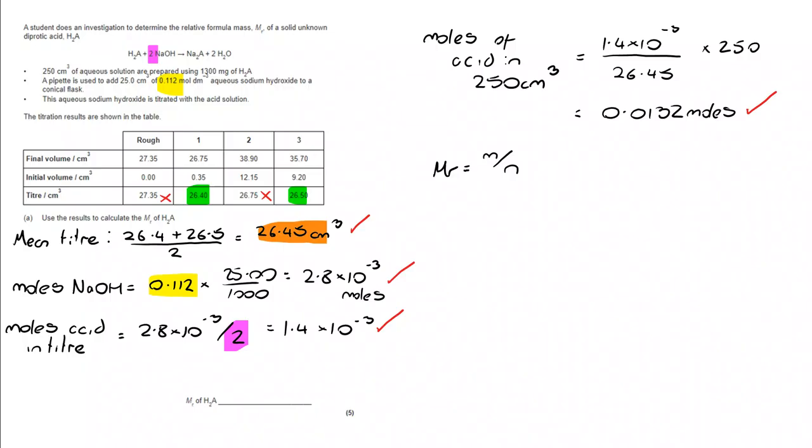Now, my MR is M divided by N. I've converted my milligrams into grams, 1.3. I am dividing by N, which is 0.0132, giving me an MR of 98.49.